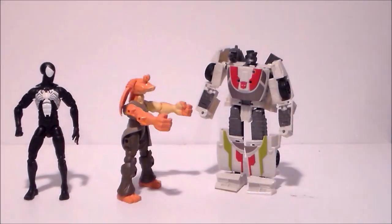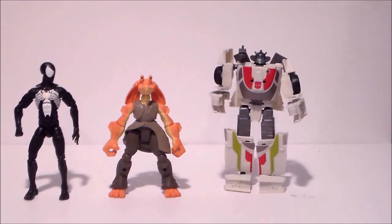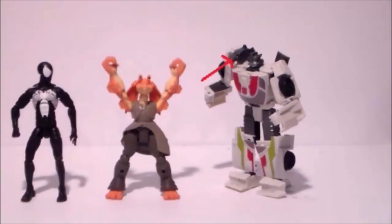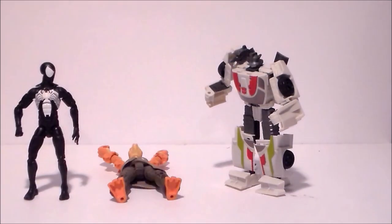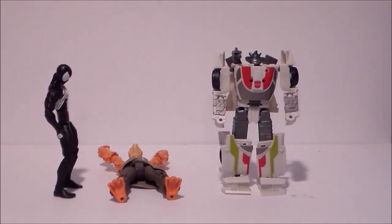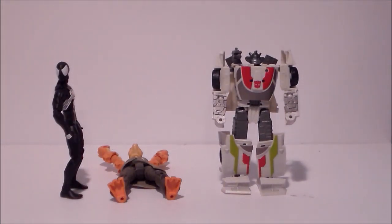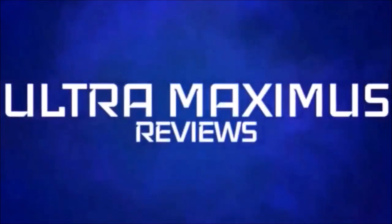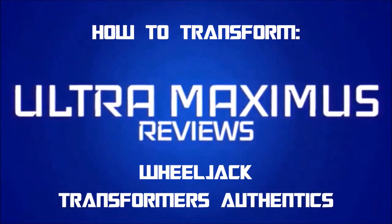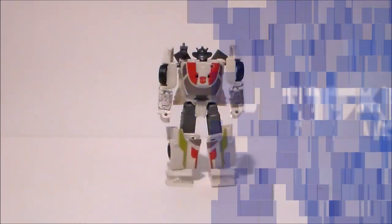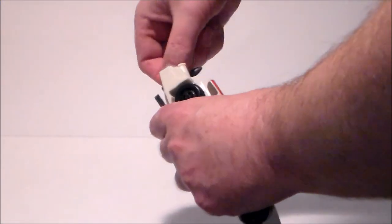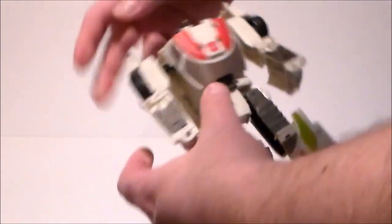This is a Big Legends figure transformation. It's pretty simple. What we're going to do is take the shoulder cannon off, straighten up the arms like this, then take the feet and clip them down.